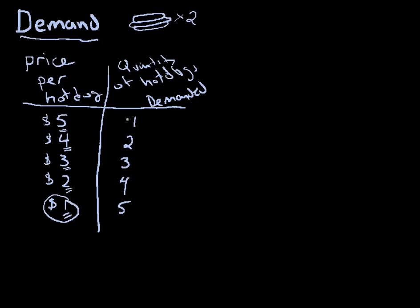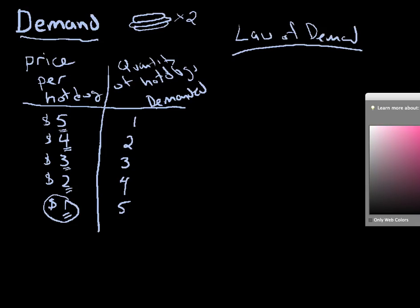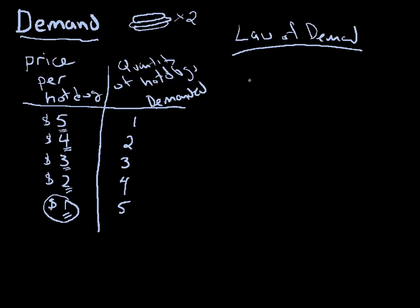Something's happening here. As I add more hot dogs, I'm getting less value. This is one reason why the law of demand holds. This is our first important concept — it's so important I'm going to change my color here. This is what the law of demand is based on — it's called diminishing marginal utility.